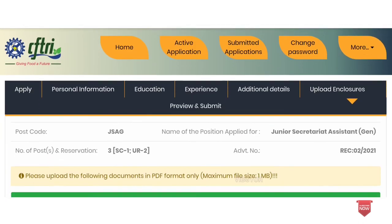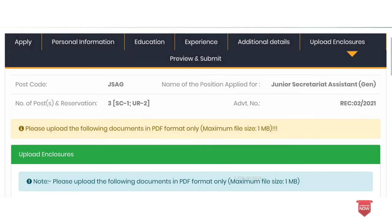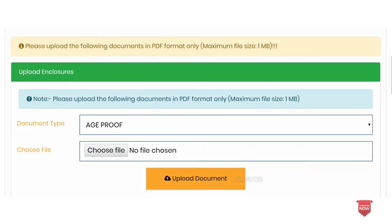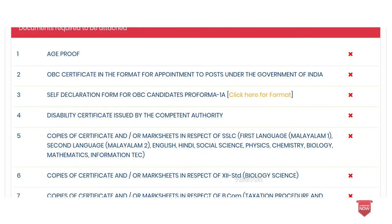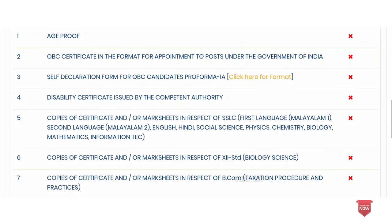The last procedure is to upload enclosures. You can use age proof at the 10th level. Upload education qualifications and certificates. You can get the age proof, disability certificate, self-declaration, and copies of certificates — 10th level, plus 2 level, and graduation level certificates should all be uploaded.